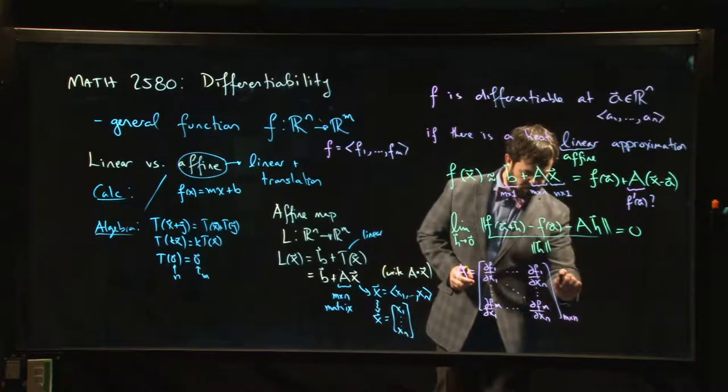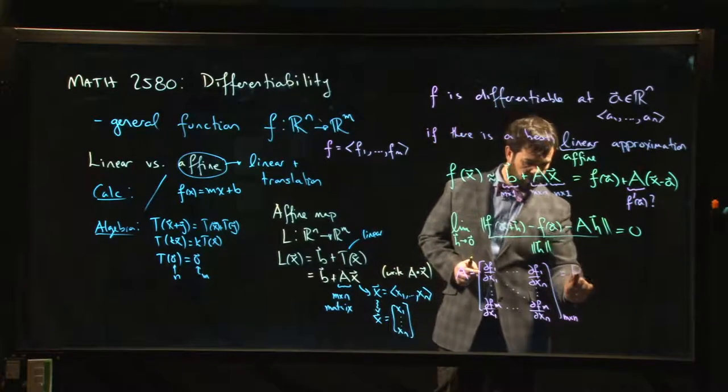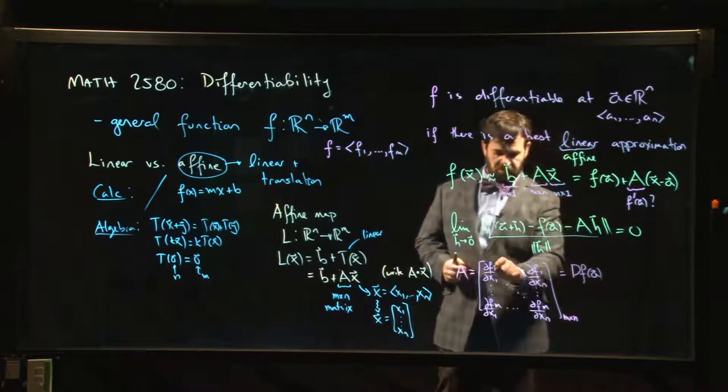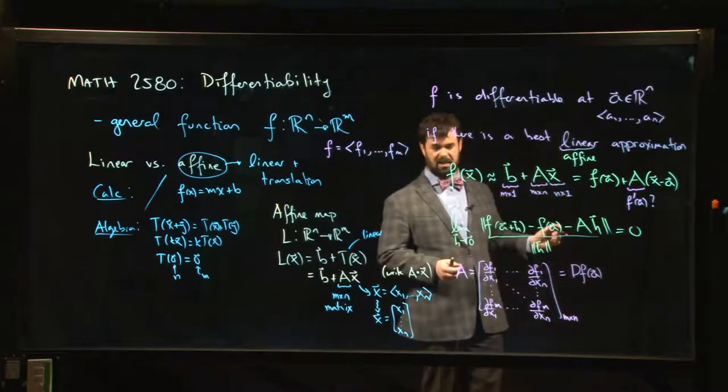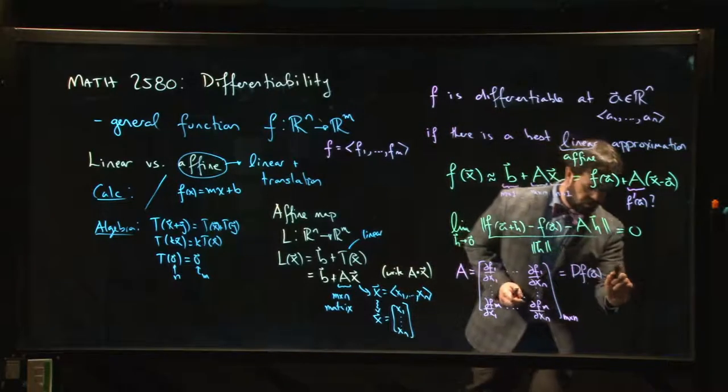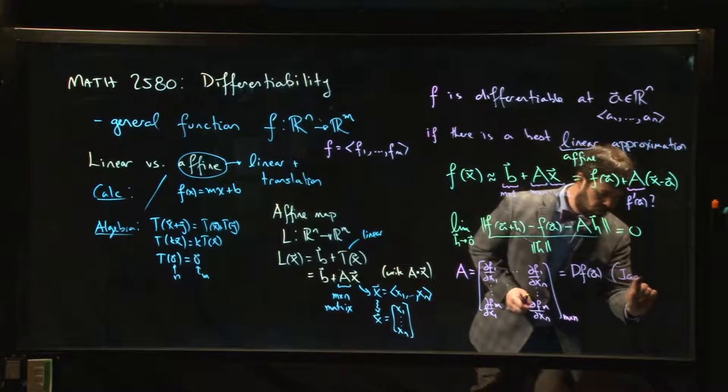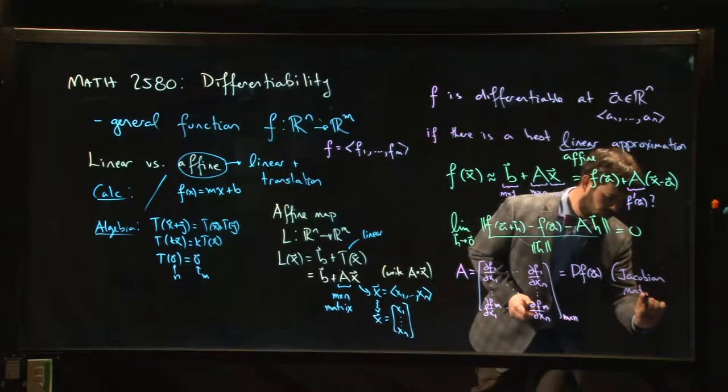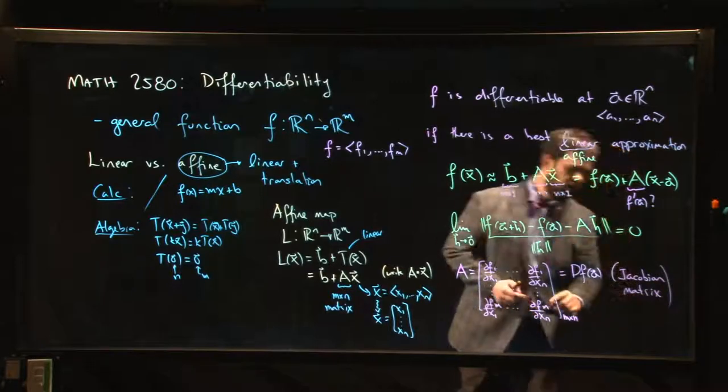There are a lot of different notations you'll see for this. I'll use this one: df at a. These should all be evaluated at a, but I'm too lazy to write that down. This is sometimes referred to as the Jacobian matrix of your function.